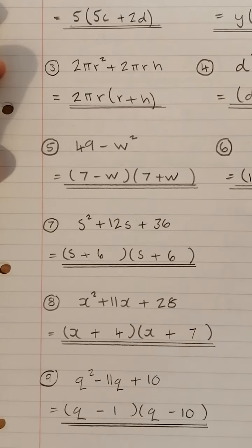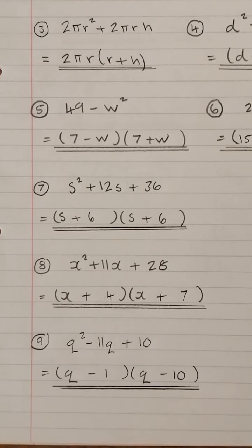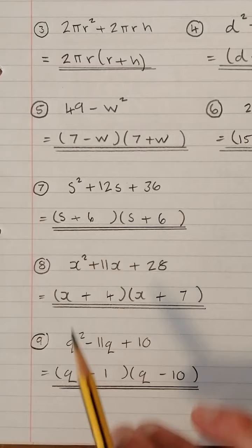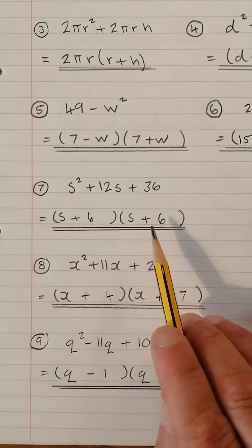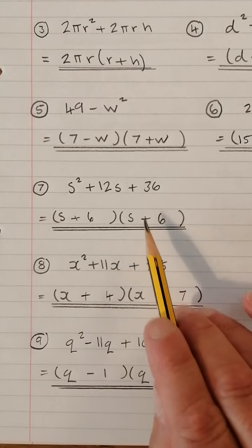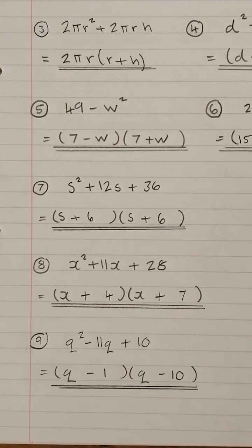Let's move on to question 7 now, where we have S² + 12S + 36 to factorise. S times S gives S², +6 times +6 gives +36, and +6 add 6 gives +12. That's how these work. So it's (S + 6) times (S + 6).